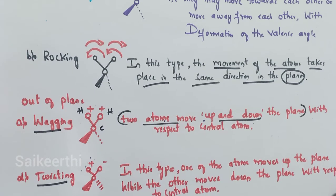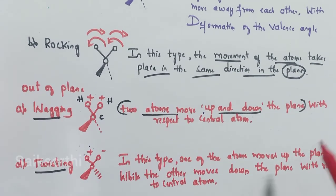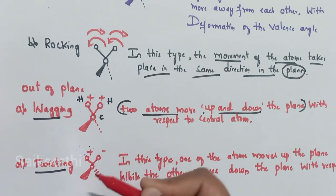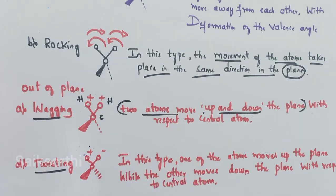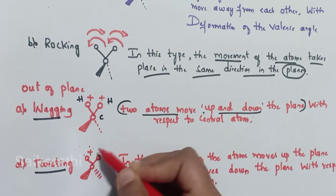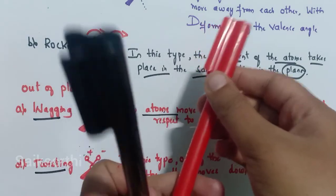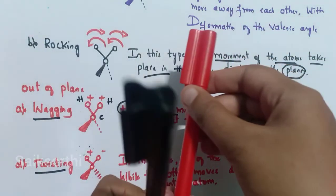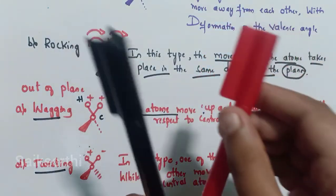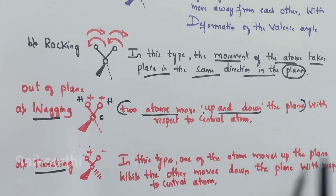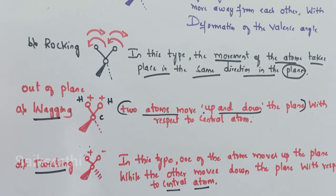Now coming to twisting, which is also out-of-plane. In twisting, one atom moves up the plane while the other moves down the plane with respect to the central atom — exactly opposite to wagging. One atom moves up while the other moves down; this is the twisting vibration.